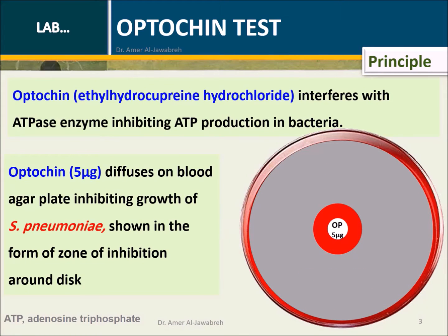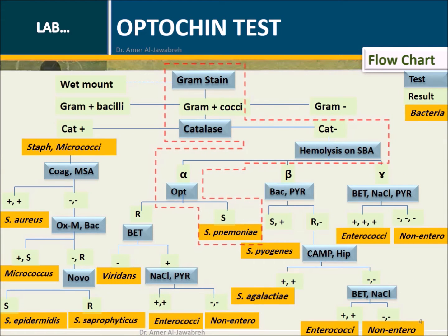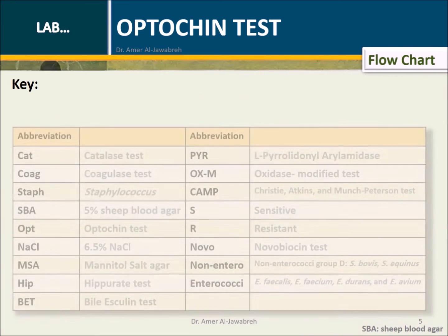This inhibition is shown in the form of a zone of inhibition around the disc. The flow chart shows that gram stain, catalase test, and type of hemolysis are prerequisites for the optochin test. The tested bacteria should be gram-positive cocci, catalase negative, and alpha-hemolytic.